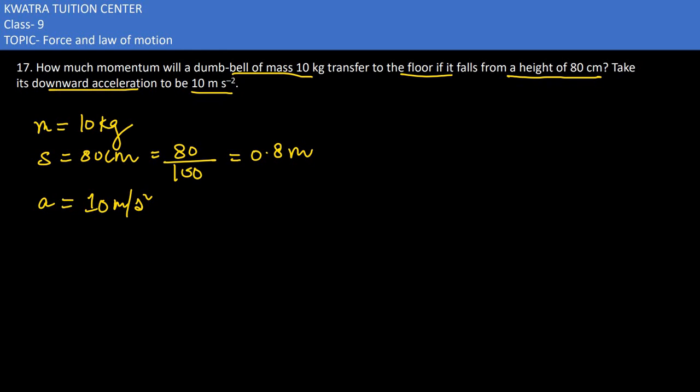Since they are dropping the dumbbell, initial velocity would be 0 meter per second and we need to find the final velocity, that is v.